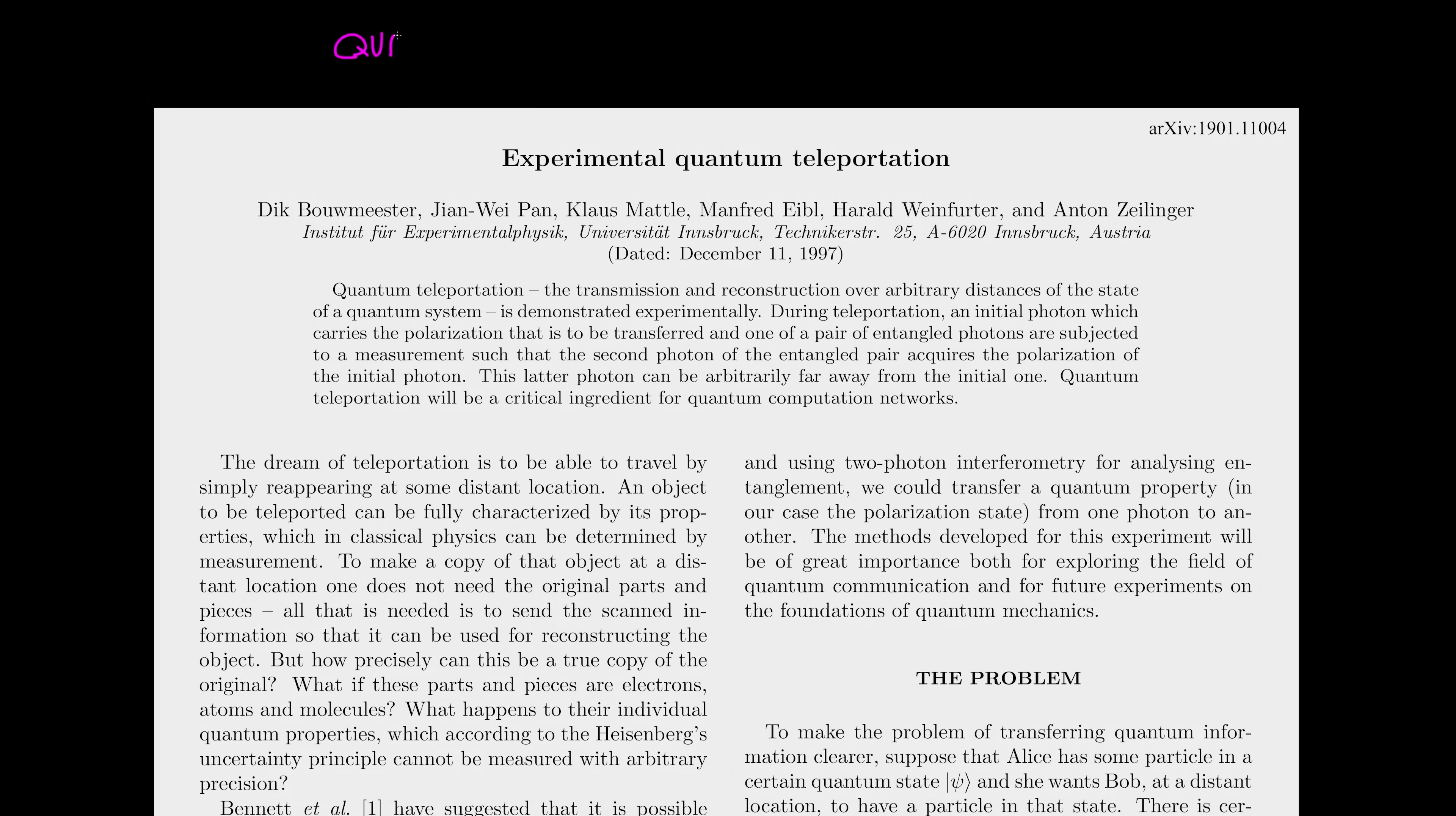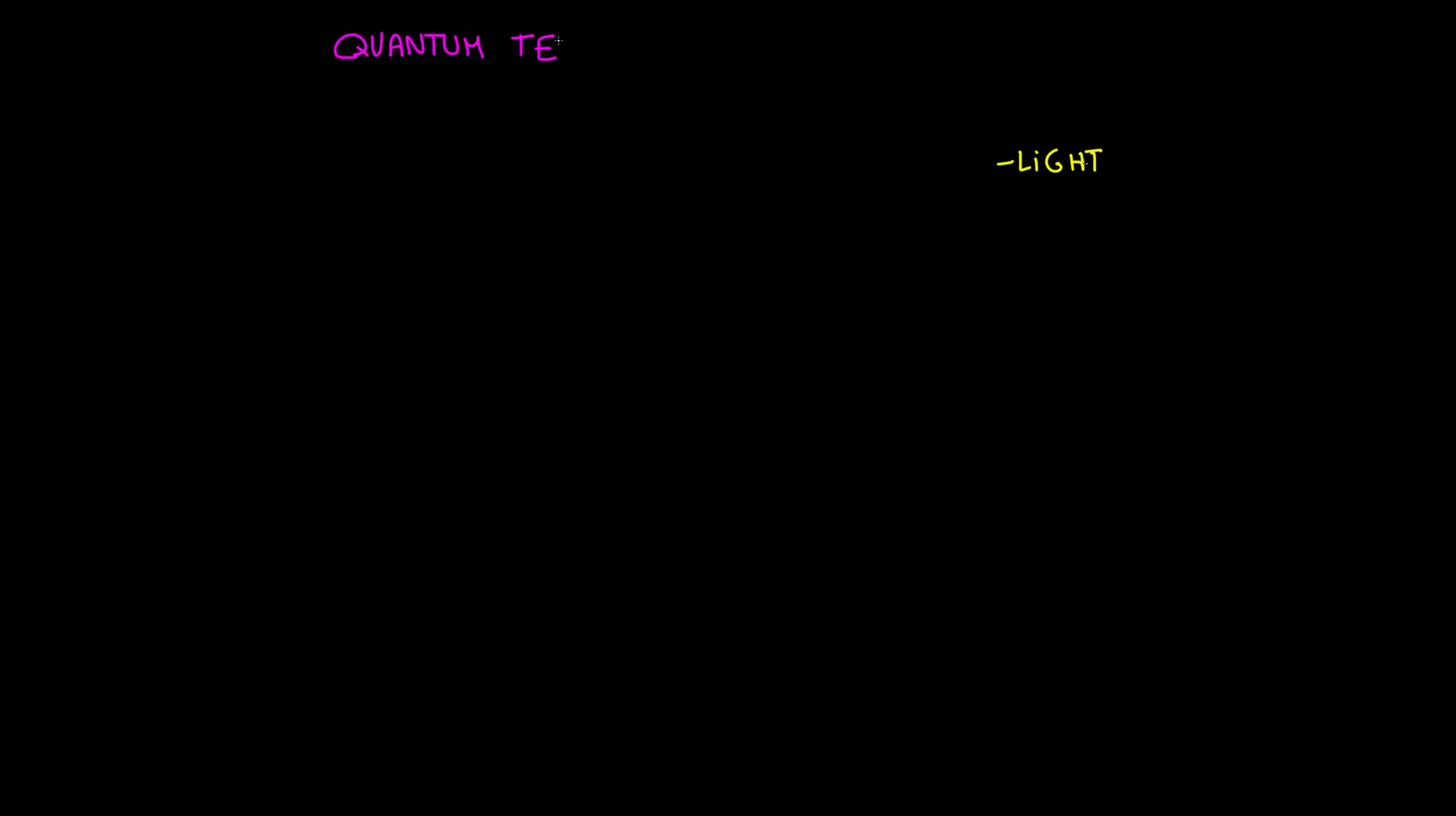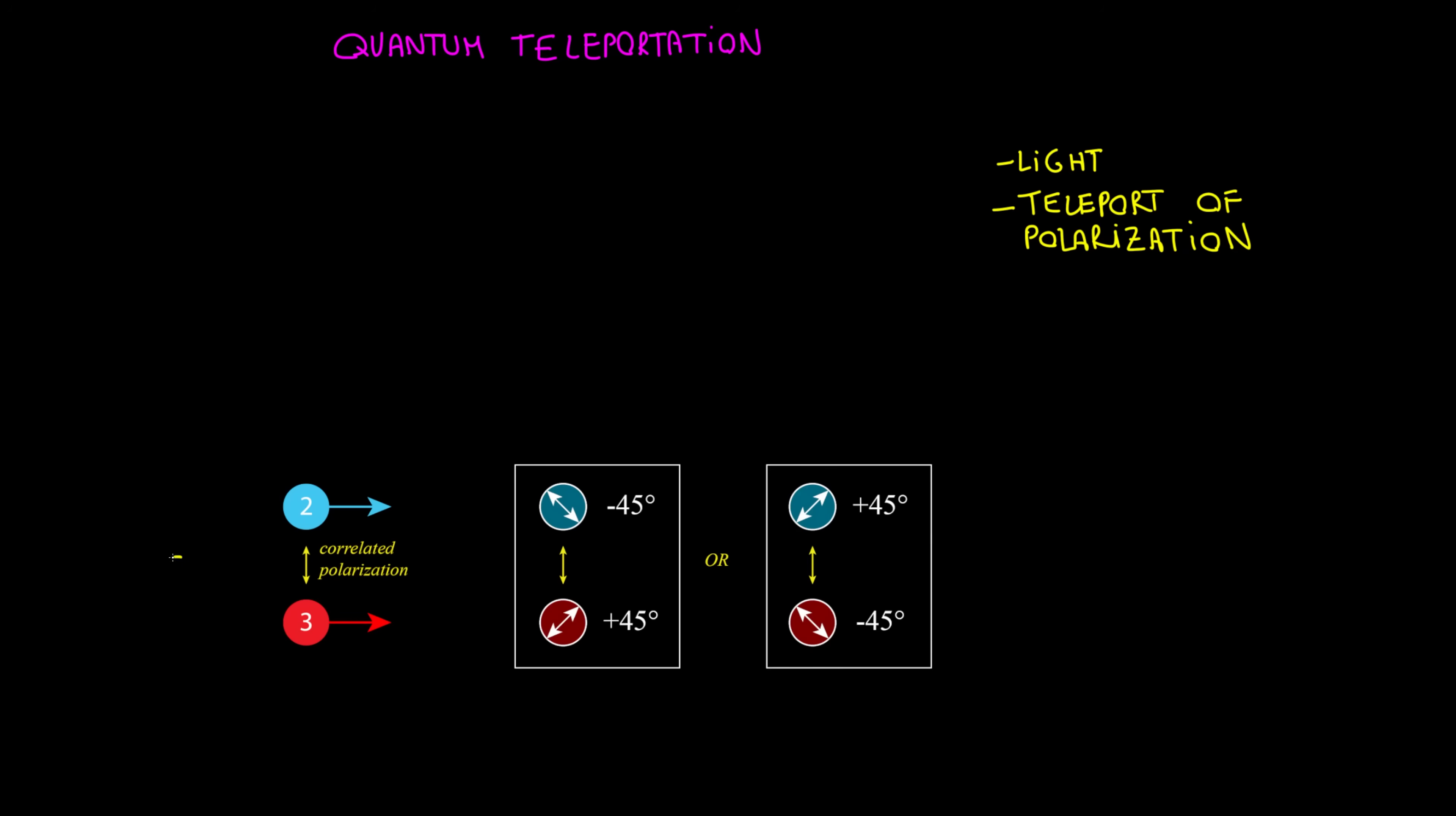Experimental quantum teleportation is an important paper that involves light and hypothetical teleport of polarization. At first approximation it follows this process. We have photon 2 and 3 entangled, meaning they have correlated polarization. If one is minus 45, the other is plus 45 or vice versa.